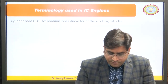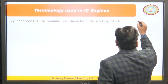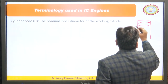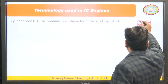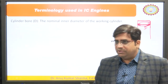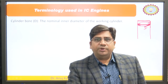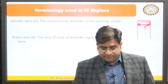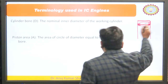Now we will discuss different terminology used in IC engines. First is the cylinder bore — the nominal or inner diameter of the working cylinder. The cylinder is circular in shape, and the diameter of this cylinder is known as the cylinder bore. Second is the piston area — the area of a circle of diameter equal to the cylinder bore.